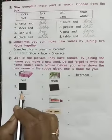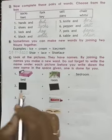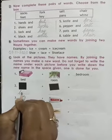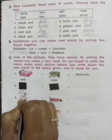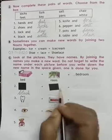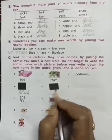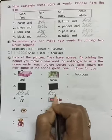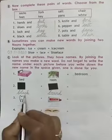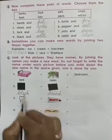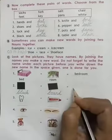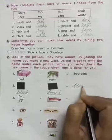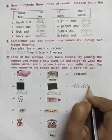Here you can see this is a picture of black color, so we shall write here 'black'. And this is a picture of a board, so we shall write here 'board'. By joining both these nouns together, it becomes 'blackboard'.